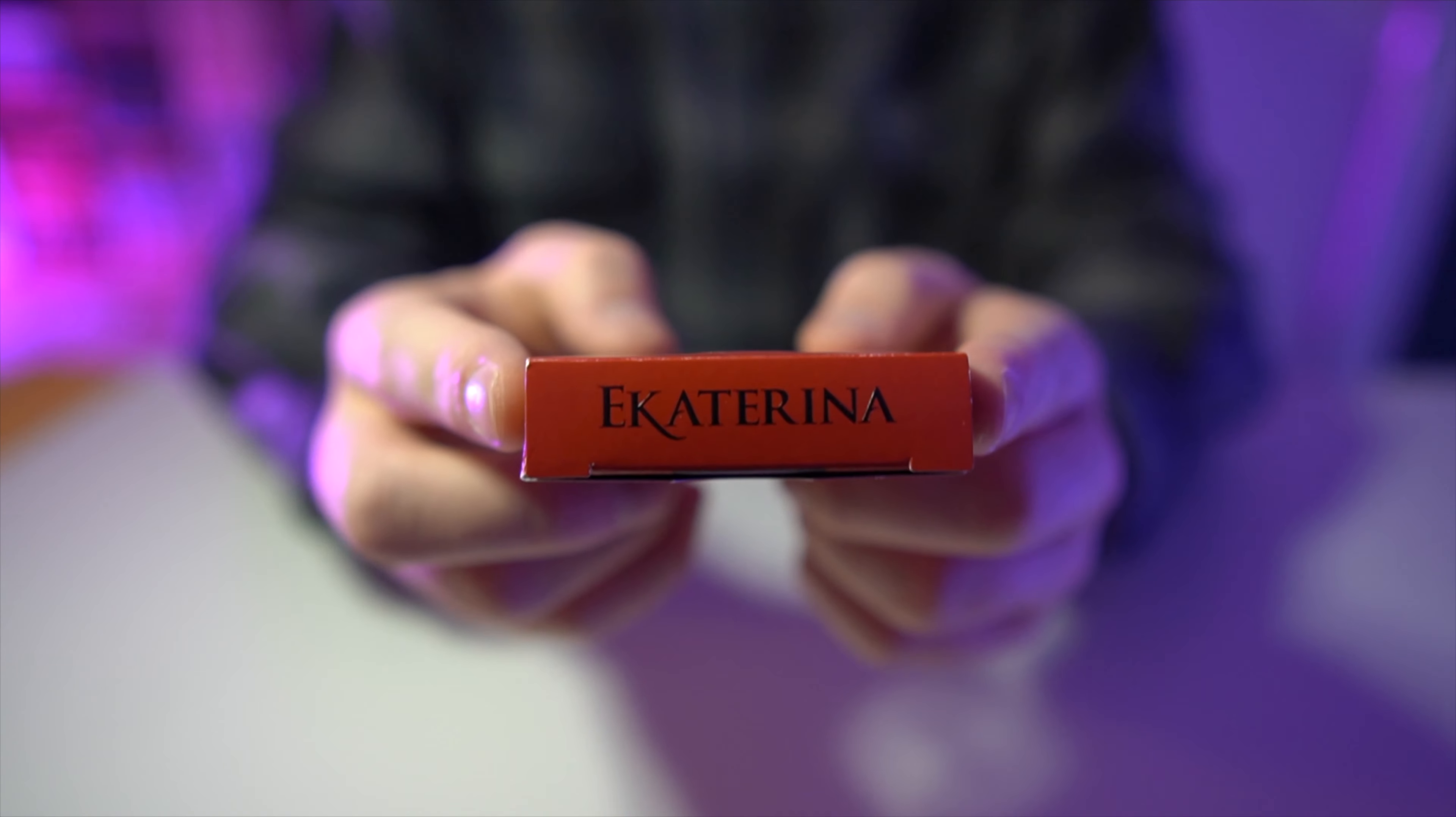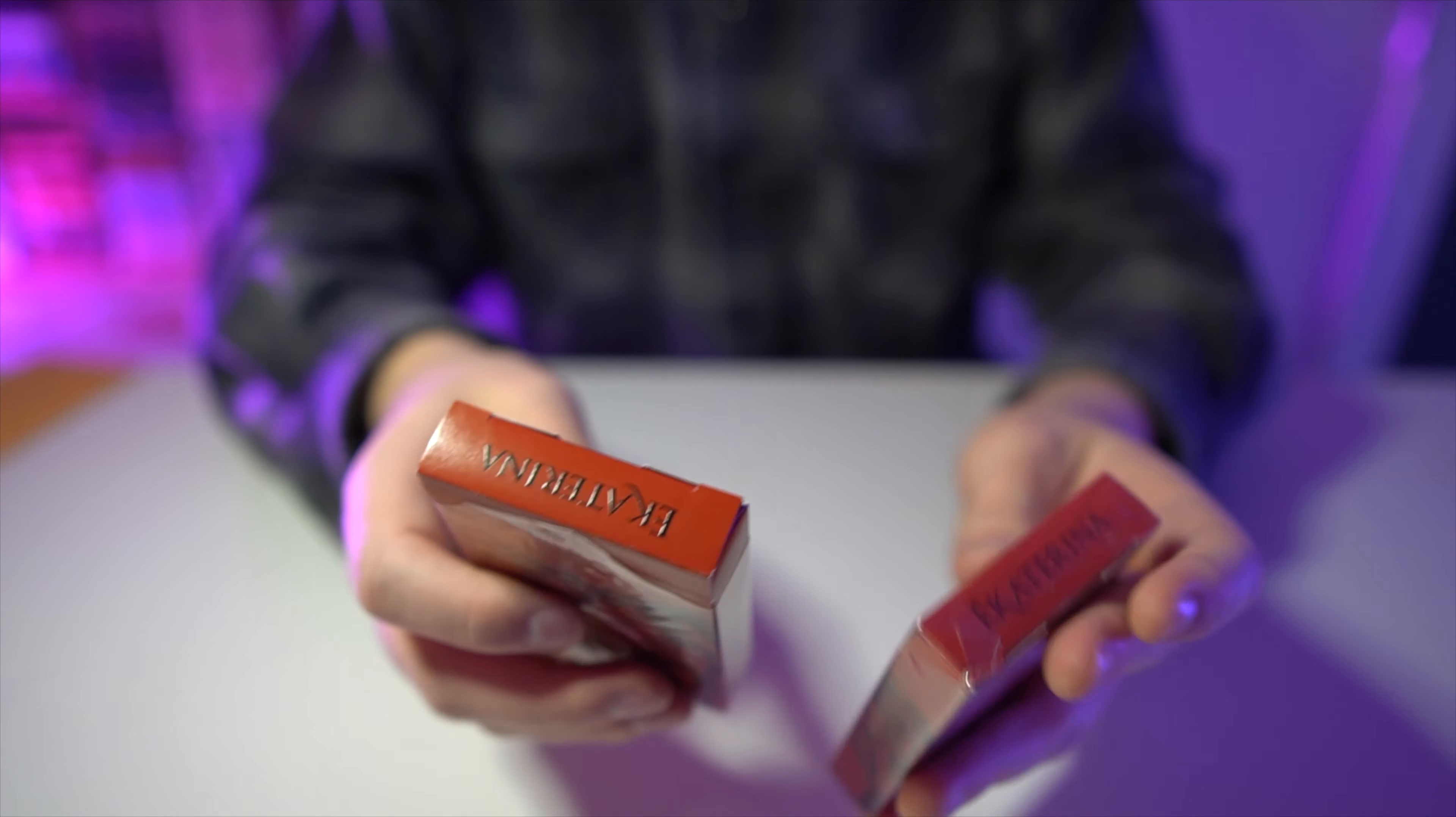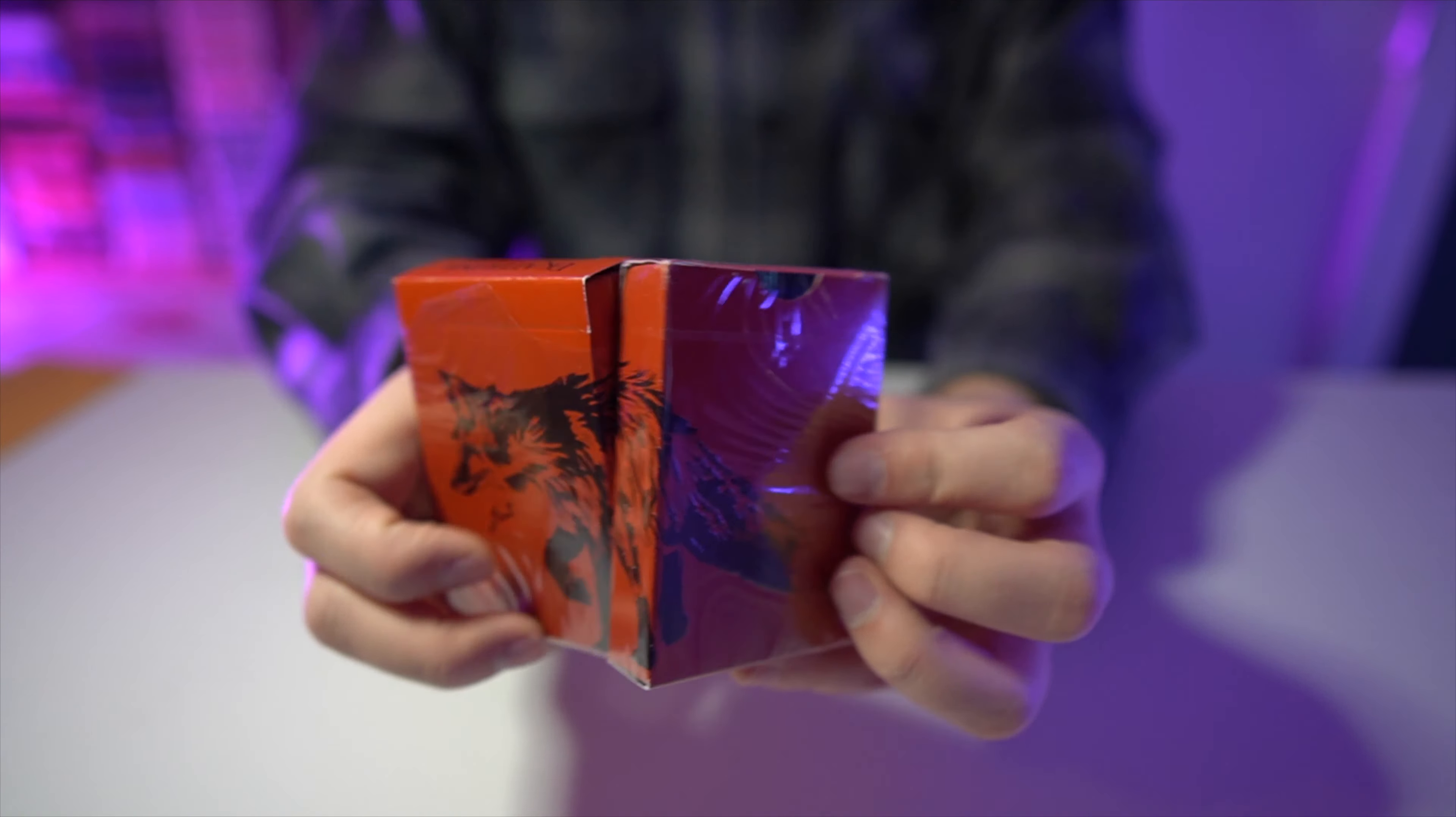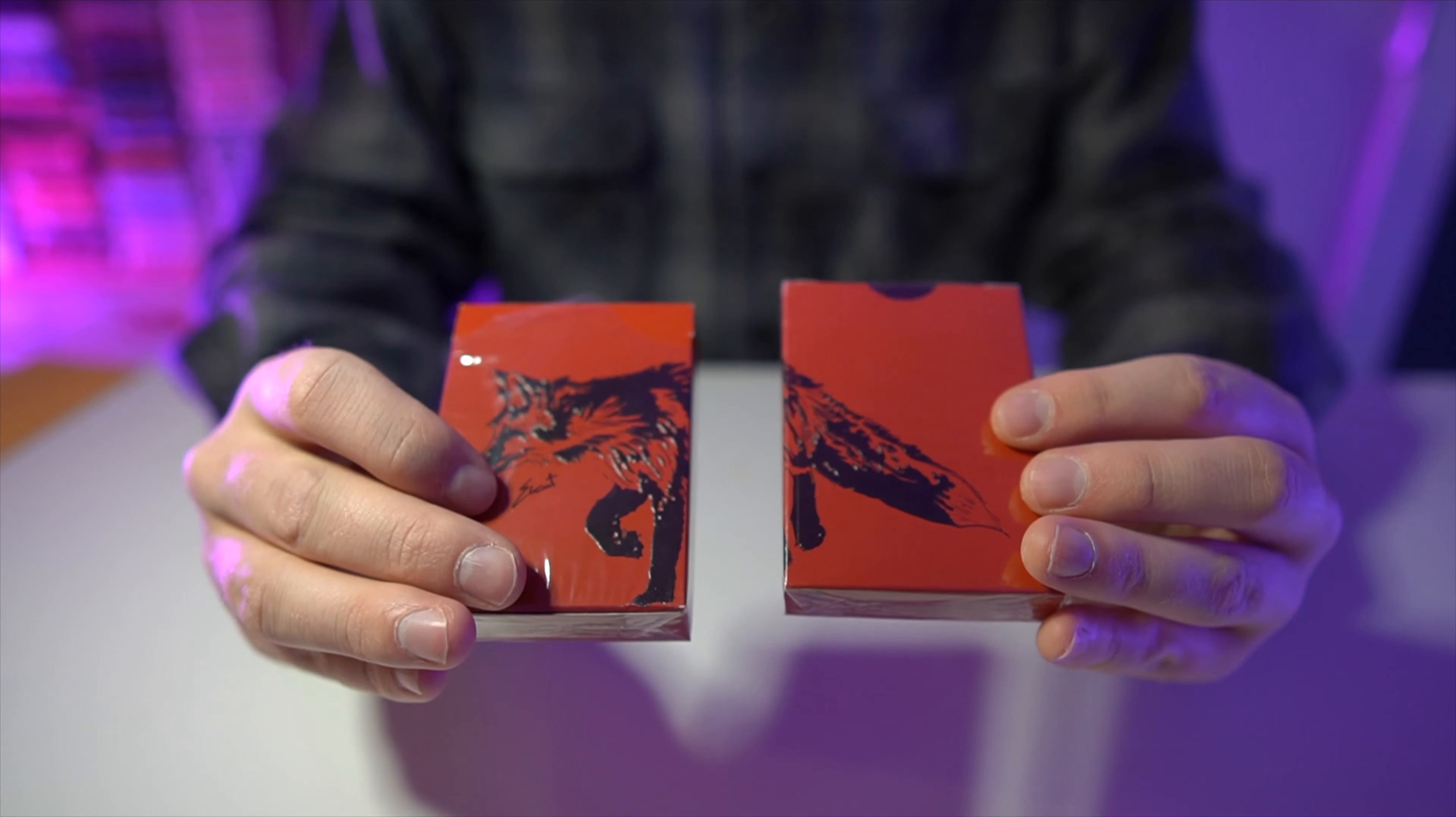First off here, on the top it says Ekaterina. Then you'll notice on the front, wrapping all the way around to the back, there is the picture of the fox, which continues all the way around. And if you angle the cards just right like this, you can get the full picture of the fox.